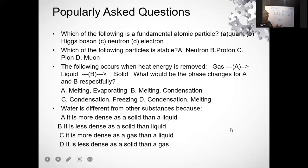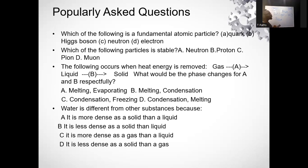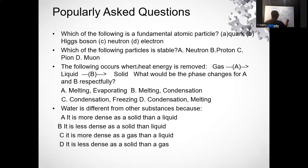Electrons are fundamental particles — they are fundamental particles called leptons. Looking at the options, you can see that electron is there. But the key answer to note is that quarks are a fundamental atomic particle.